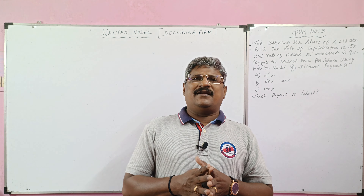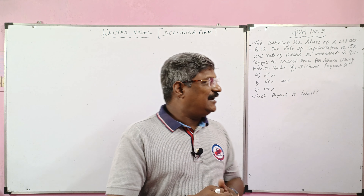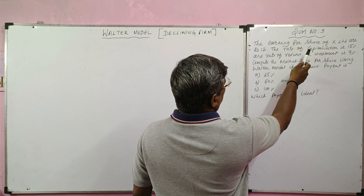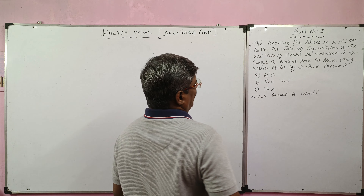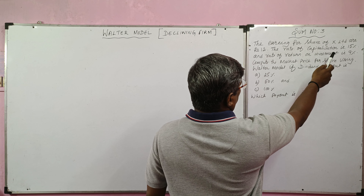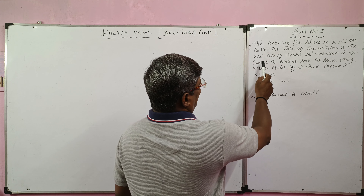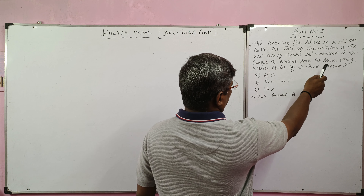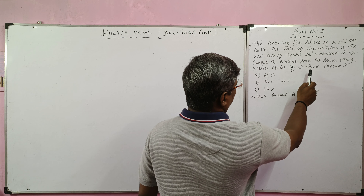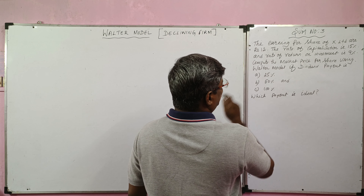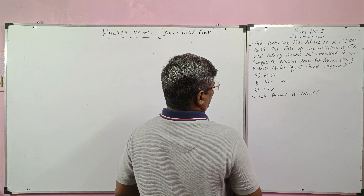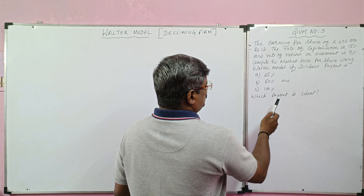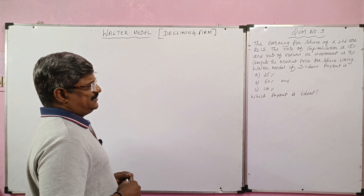Here, the rate of return is lesser than cost of capital. The problem is sum number three: the earning per share of X limited is rupees 12. The rate of capitalization is 15% and the rate of return on investment is 9%. Compute the market price per share using Walter model if dividend payout is: situation A — 25%, situation B — 50%, situation C — 100%. Which payout is ideal? Which is optimum?